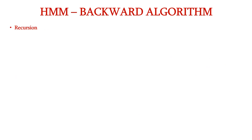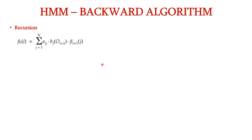The next step is the recursion step. The general equation for recursion is: beta_t(i) = summation over j of a_ij × b_j(O_{t+1}) × beta_{t+1}(j). Here, a_ij is the transition probability, b_j(O_{t+1}) is the emission probability of the observable state at t+1, and beta_{t+1}(j) is the backward variable calculated at time step t+1.